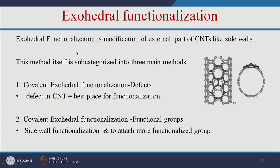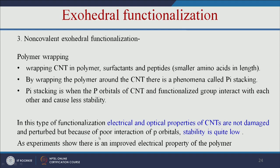Exohedral functionalization is sub-categorized into three main methods. First, covalent defect group functionalization uses defects in the CNT as the best sites for functionalization. Second, covalent sidewall functionalization adds functional groups to the side walls of the carbon nanotubes. Third, non-covalent exohedral functionalization involves adding polymer or surfactants that wrap around the CNT through a phenomenon called pi stacking, where the pi orbitals of the CNT and functional group interact. In this type, the electrical and optical properties are not damaged, but stability is quite low.